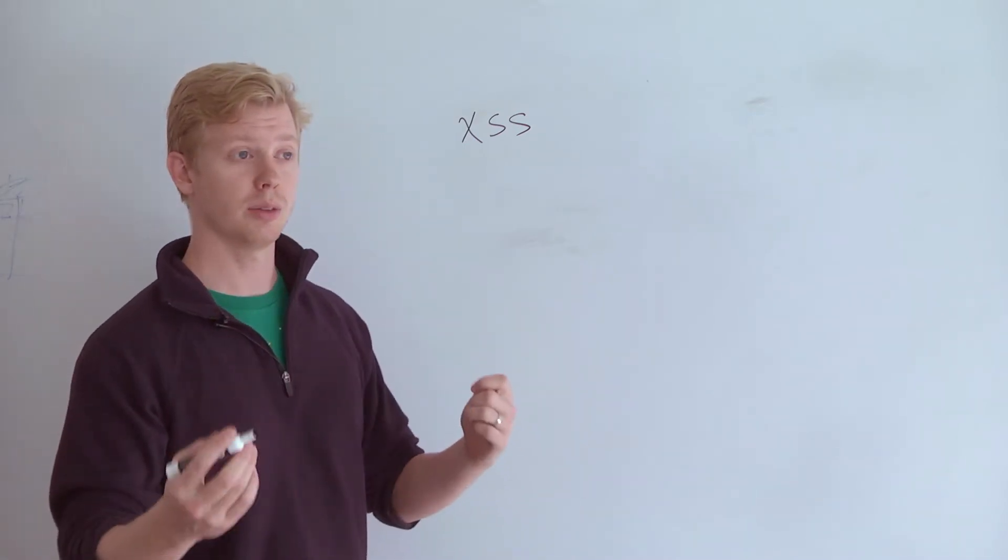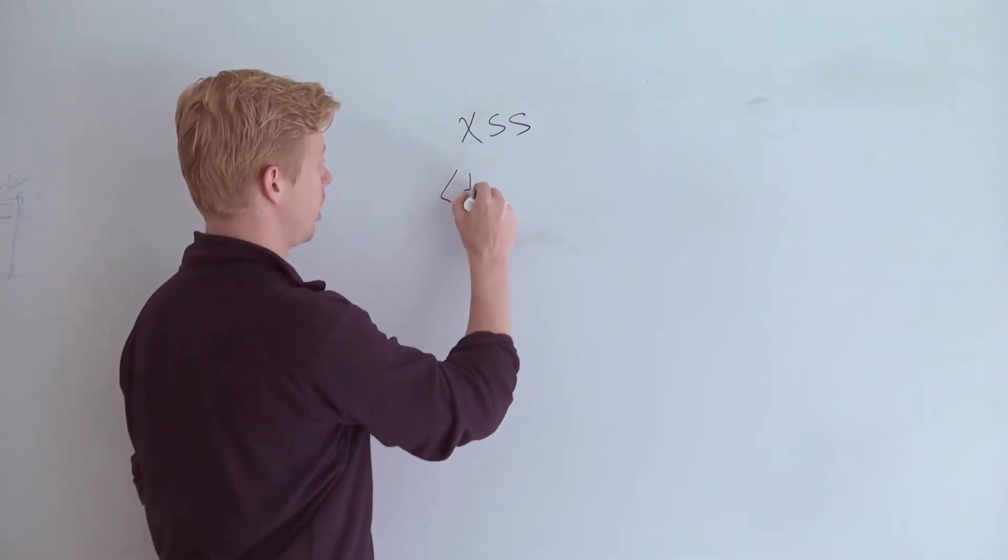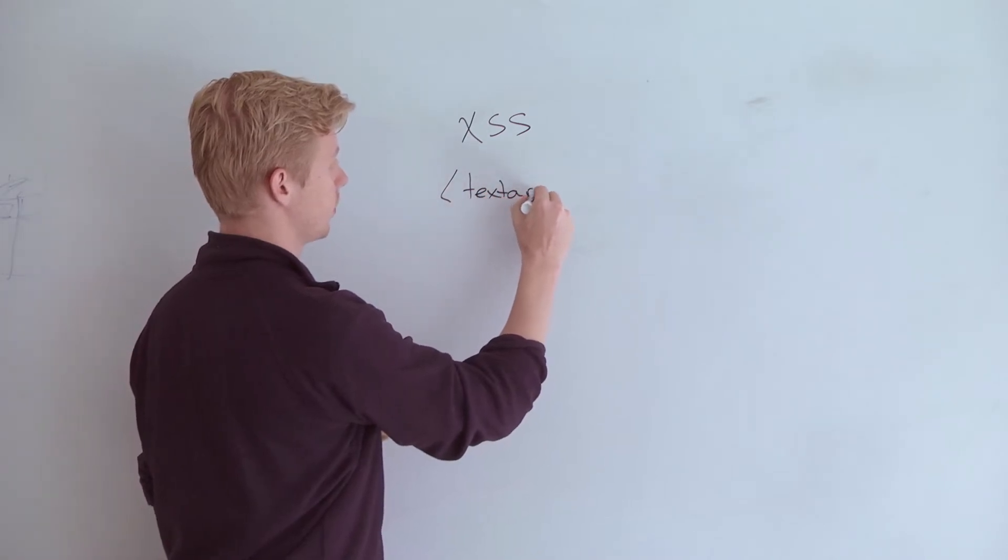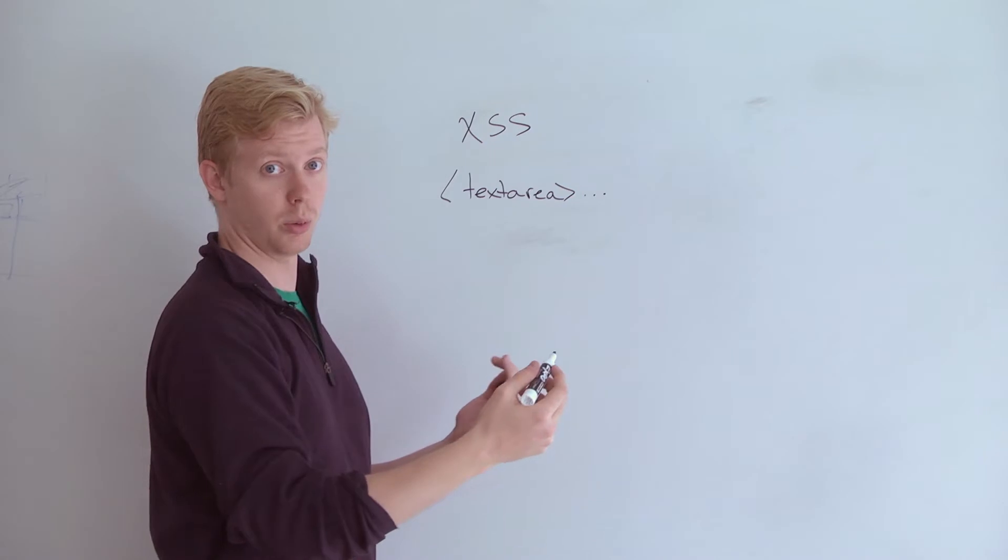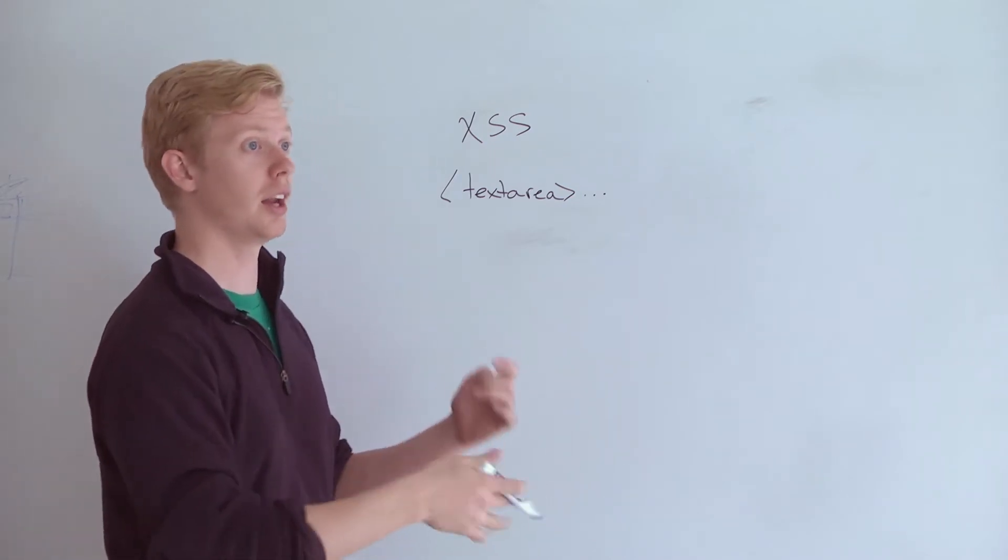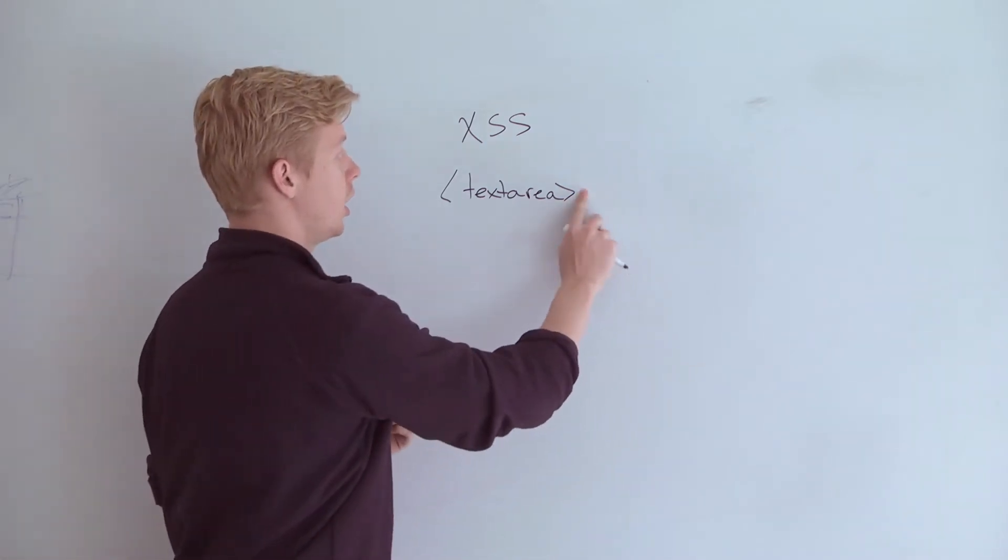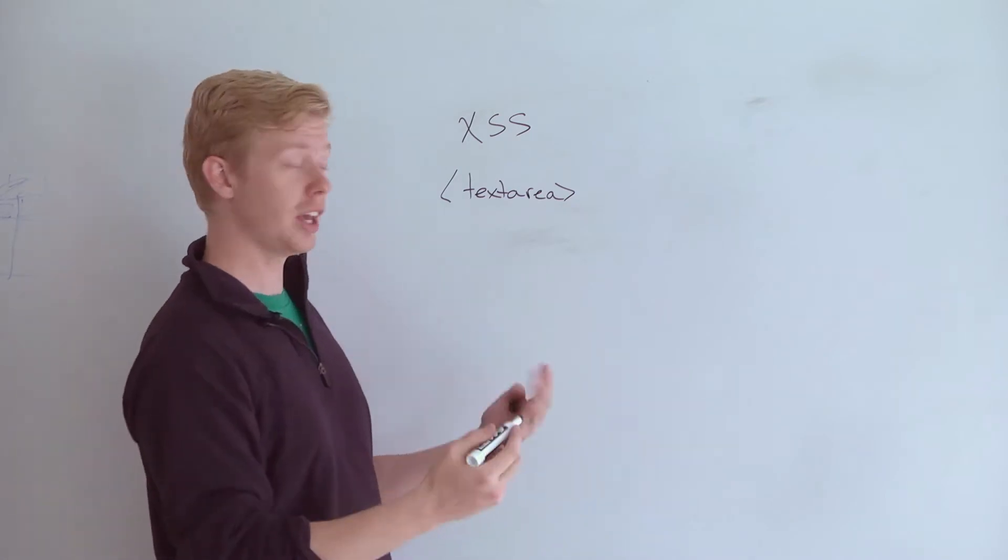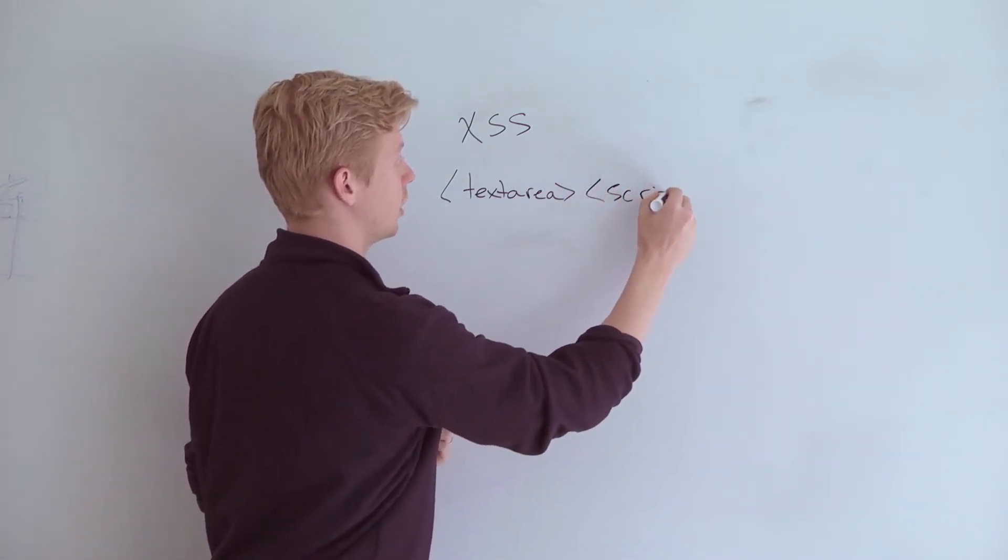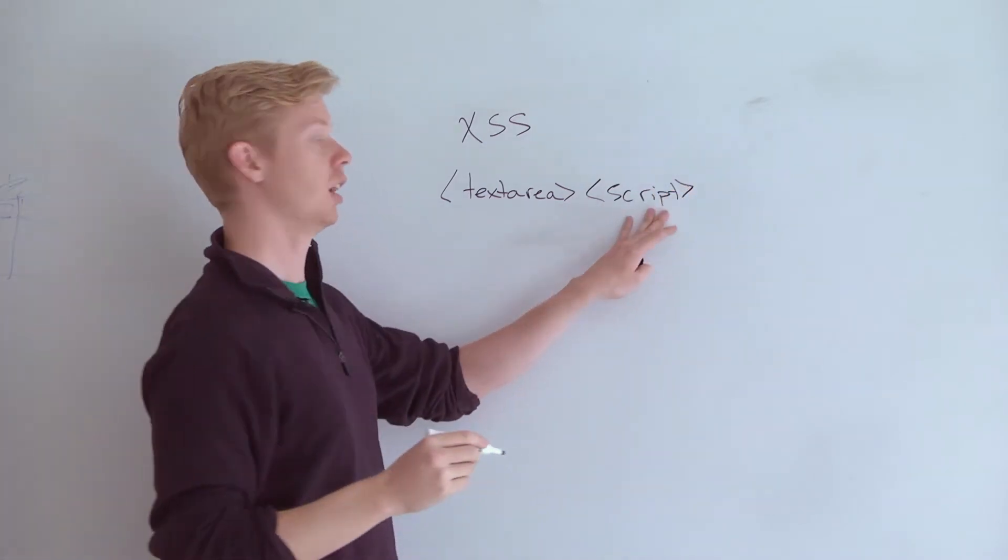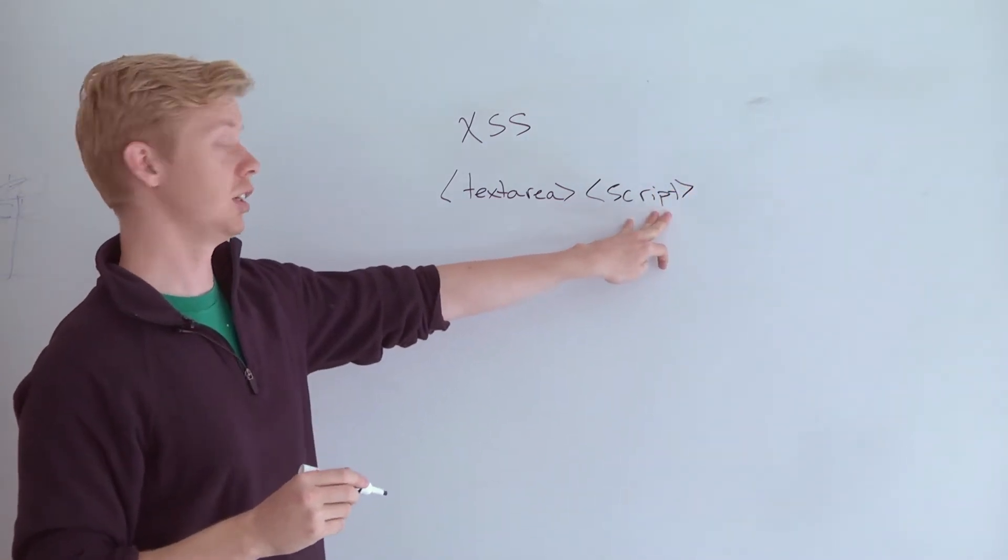But say you take some data from a user and then you print it, you return it to the user in a text area, and then here goes the—whatever the user typed in. Maybe you're editing a blog entry and this is the old blog entry. Well, if the code they actually typed in has some HTML in it, in particular if it uses the script tag, which we haven't talked about at all in this class, this is how you would include some JavaScript.